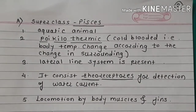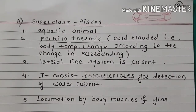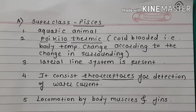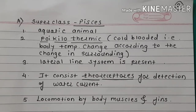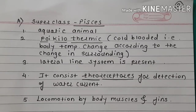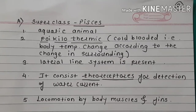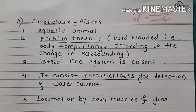Superclass Pisces — general characters. These are aquatic animals. These are poikilothermic, that is cold-blooded animals. The body temperature changes according to the change in surroundings. The lateral line system is present.